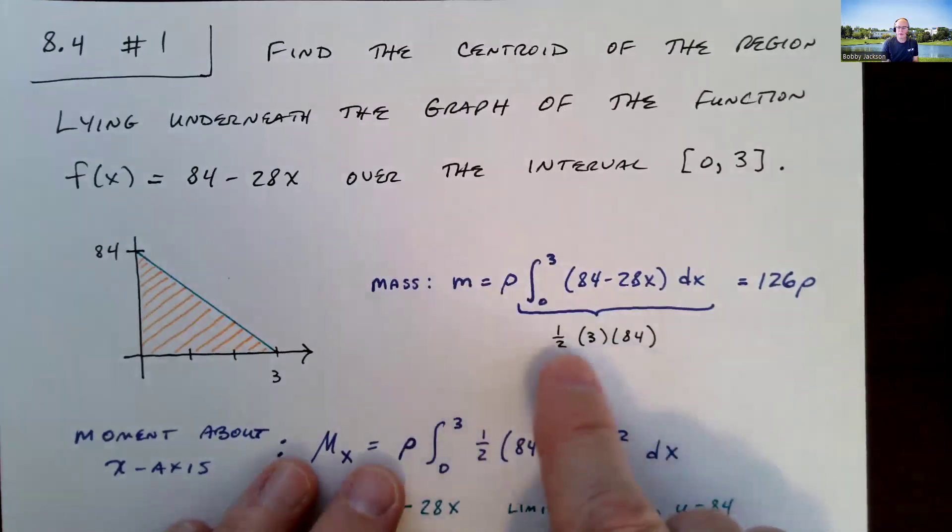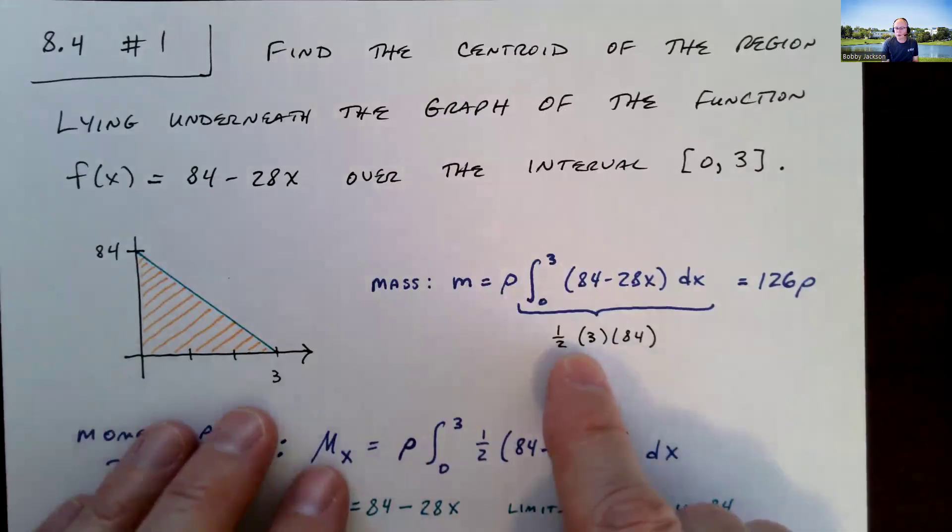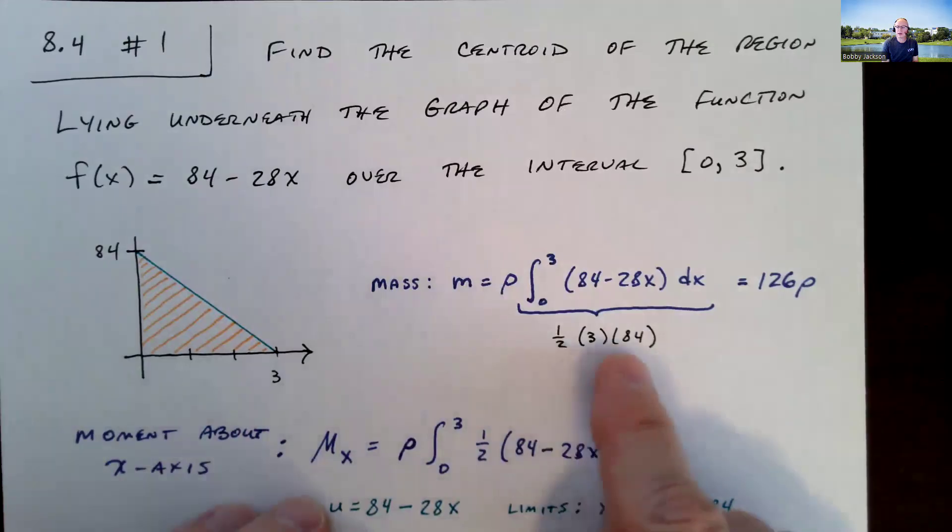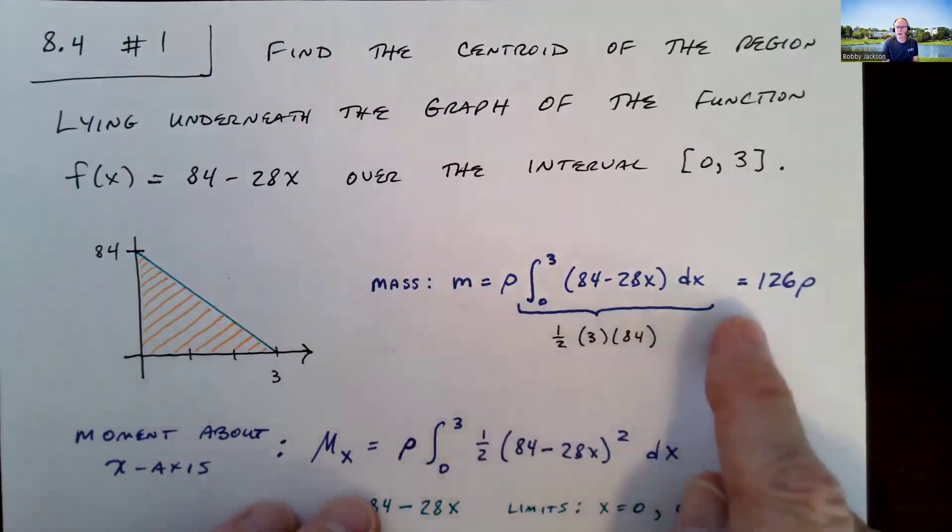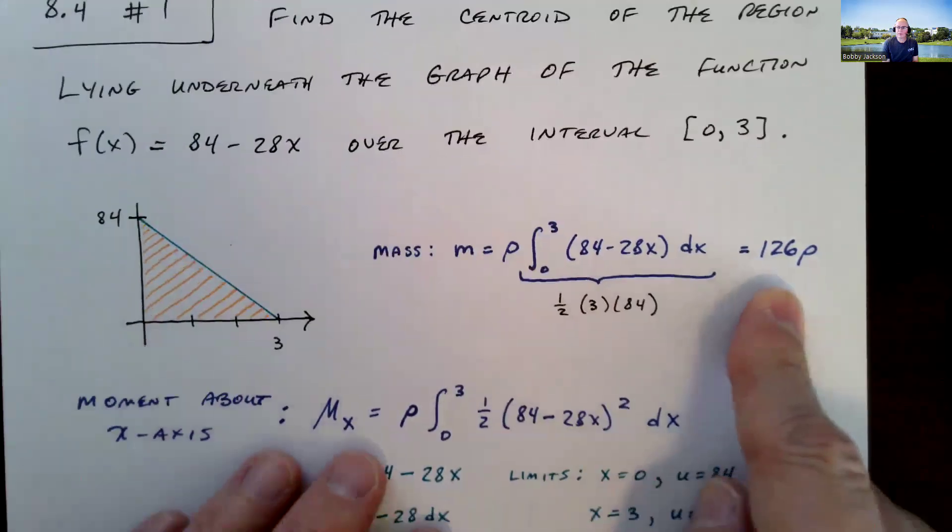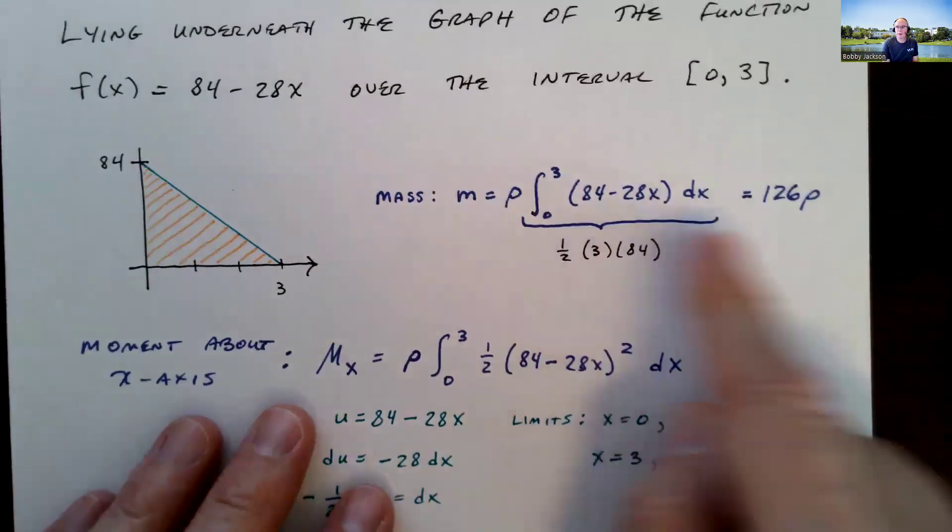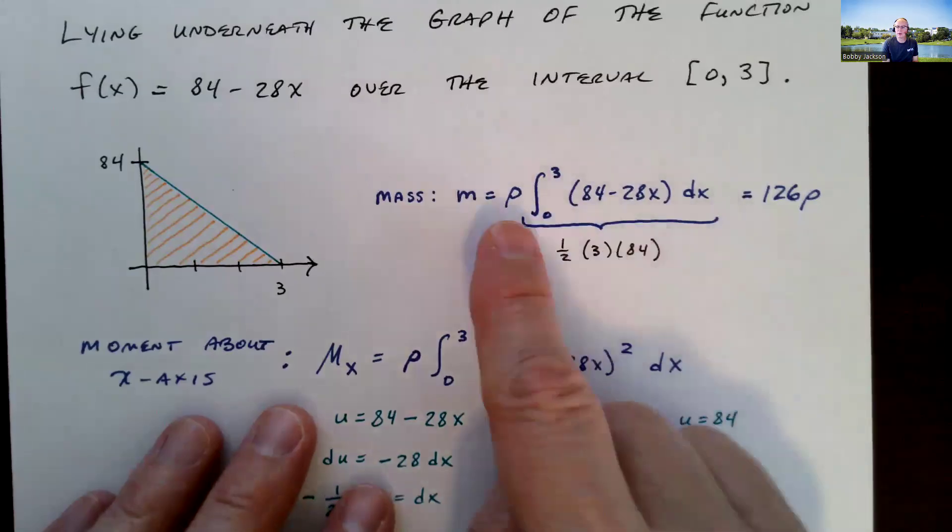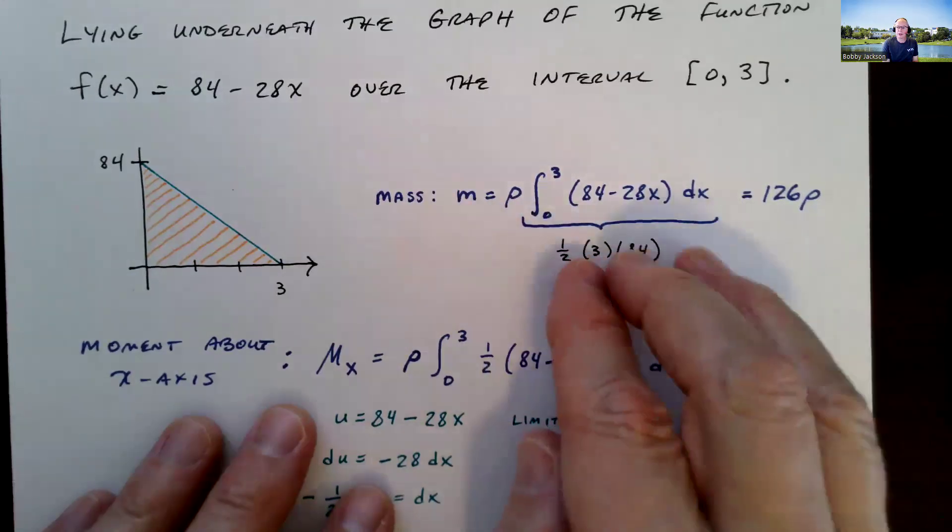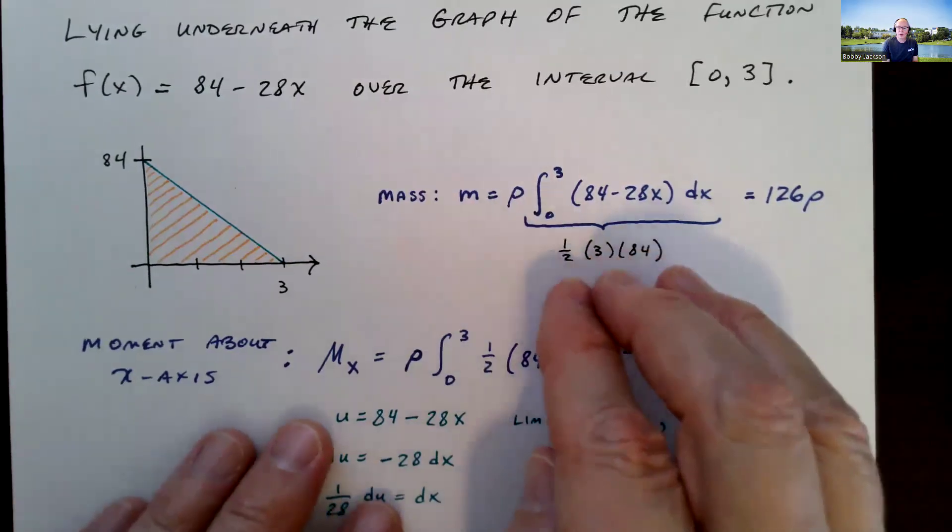This would be area in square meters. You can think about it as being a volume if it's one meter deep or thick. So we'd have cubic meters times some density, which would give us the mass in kilograms. Mass is density times the volume.